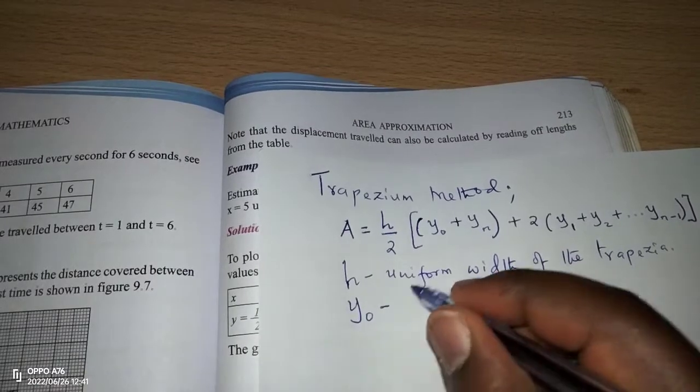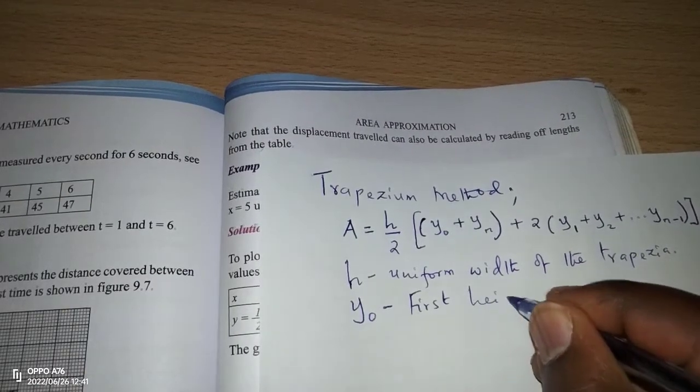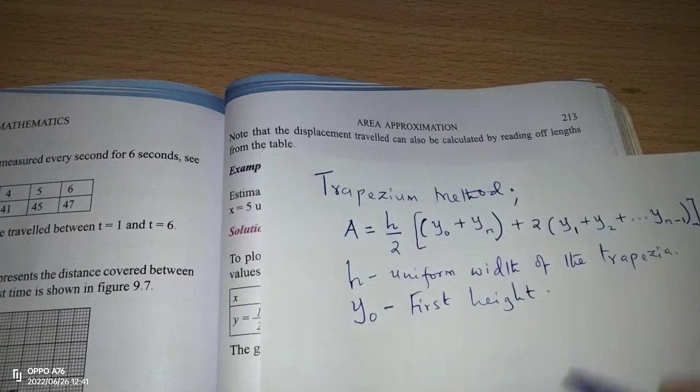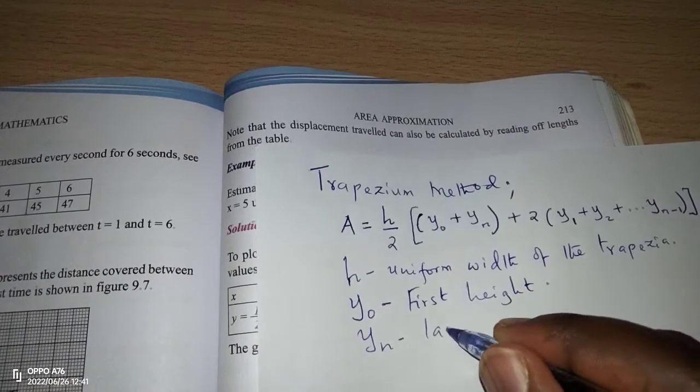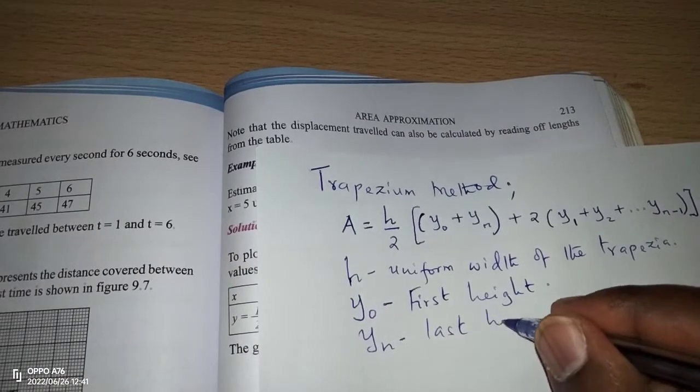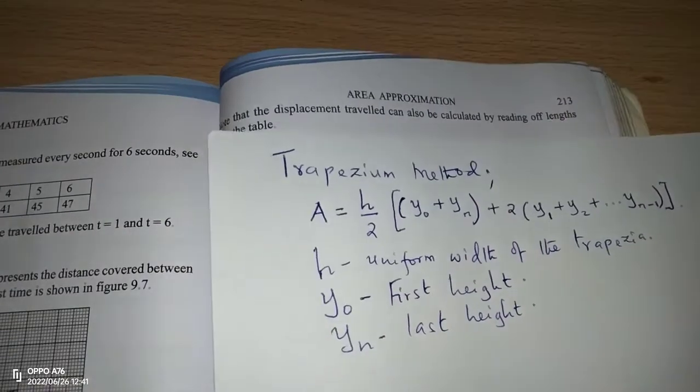y naught is the first height of the first trapezium, then we have yn, which is the last height of the last trapezium.